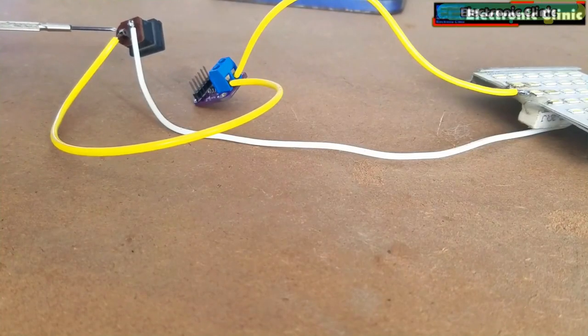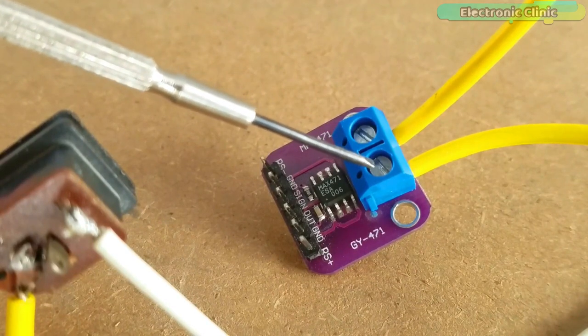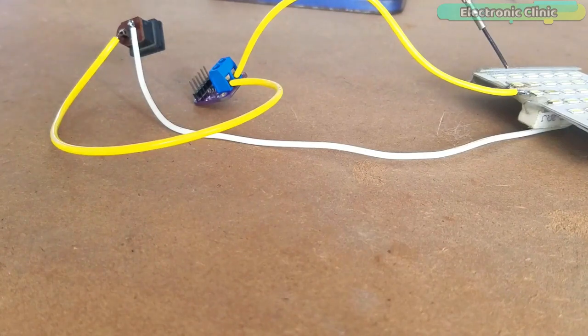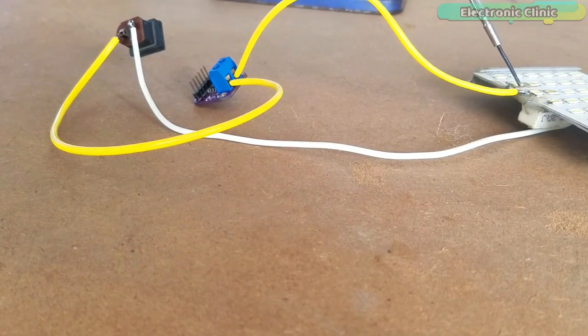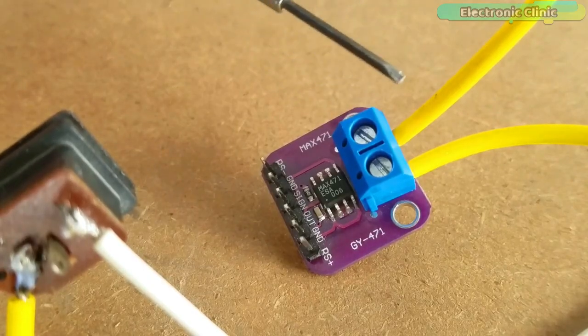As you can see the positive wire from the DC female power jack is connected with the RS plus terminal of the MAX471. And the positive wire from the LED module is connected with the RS minus terminal of the MAX471 module.